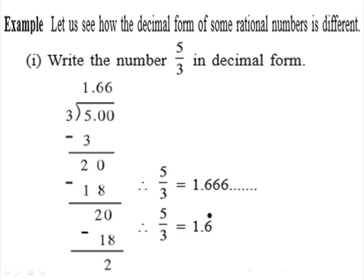Now children, let us see how the decimal form of some rational numbers is different. In the previous video, you have seen the terminating decimal form of some rational numbers, where we obtained 0 as the remainder. Now let us see some other decimal forms of rational numbers.